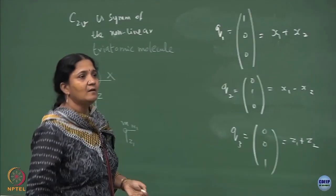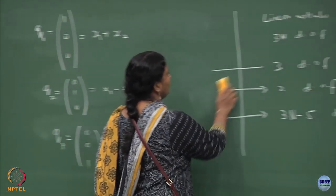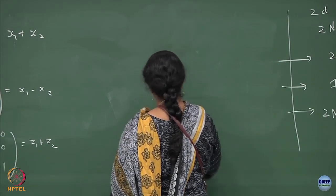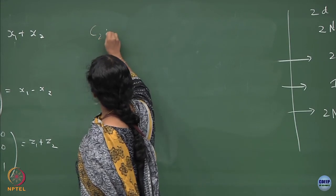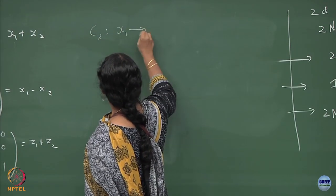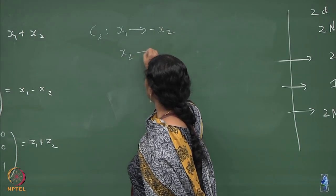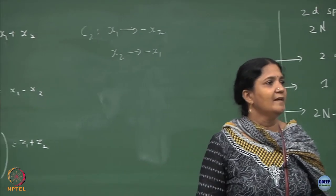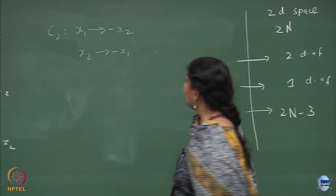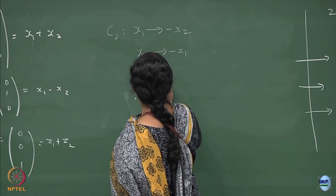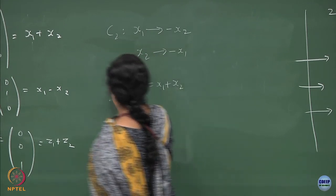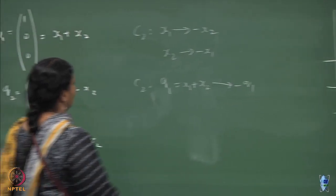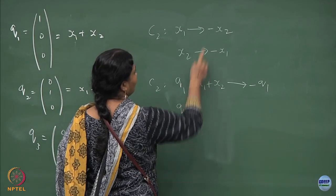The identity element is trivial, but if you want to write the C2 element, what happens? What does C2 do? C2 takes x1 to minus x2, x2 to minus x1, in the directions which I have taken. So, what will happen to q1 which is x1 plus x2 under C2 operation? q1 will go to minus q1.